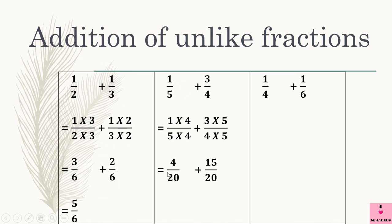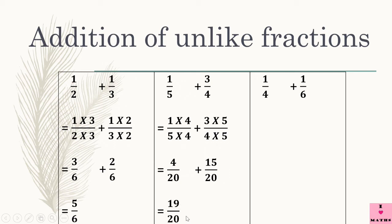Next step: 1 fours are 4, 5 fours are 20. And 3 fives are 15 and 4 fives are 20. We got the same denominator — these 2 are like fractions. 1 upon 5 is equal to 4 upon 20 and 3 upon 4 is equal to 15 upon 20, because they are equivalent fractions. Now we have 2 like fractions. We have to just add their numerators. So 15 plus 4 is equal to 19 upon 20. The denominator will remain the same — we will never add the denominators, we will only add the numerators.